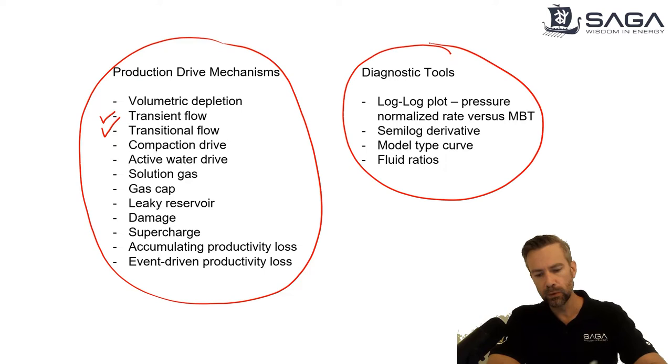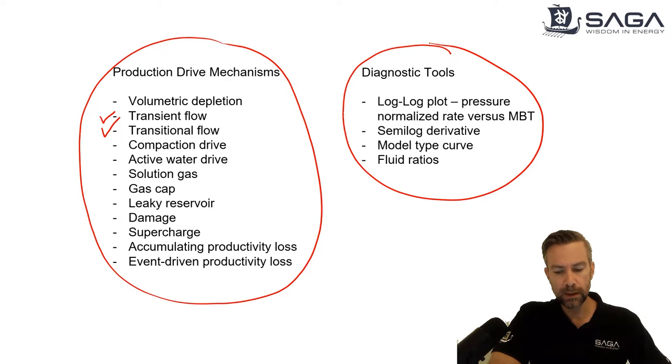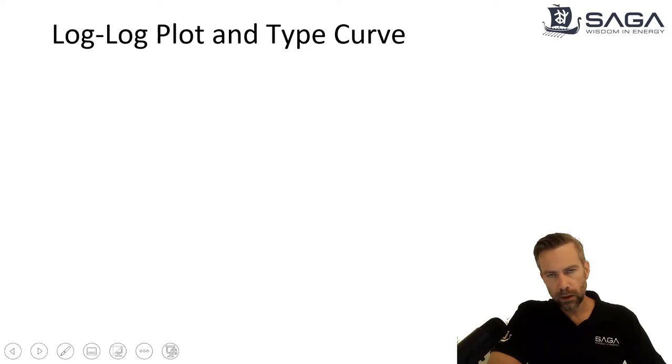And so what we want to do is get our hands on some rate and pressure data, use some of these basic diagnostic tools that I'm going to be talking about, the log-log plot with pressure normalized rate versus material balance time. This is an easy thing to plot just in Excel, very simple. You need to get your hands on a model type curve that represents the data. I'm going to talk a little bit more about that. And then we'll do a little bit with fluid ratios as well.